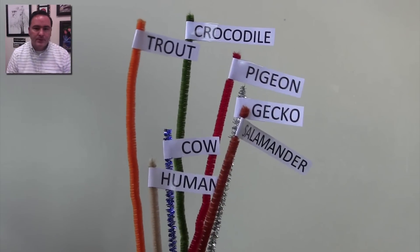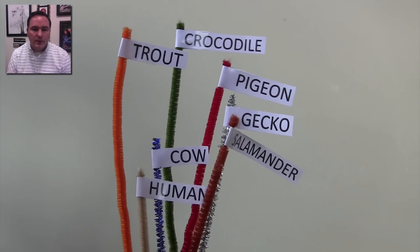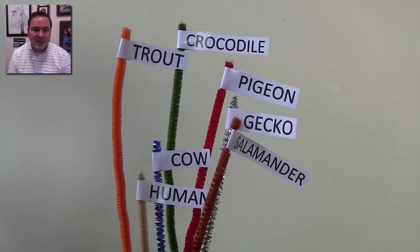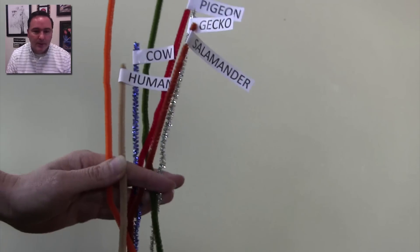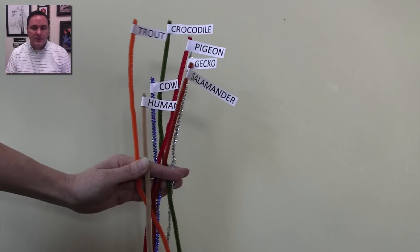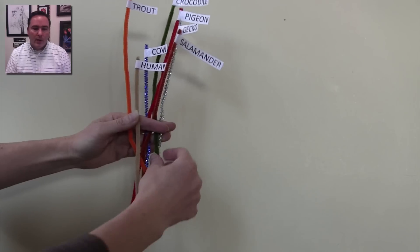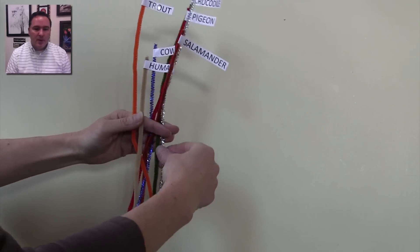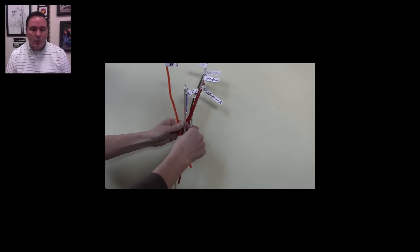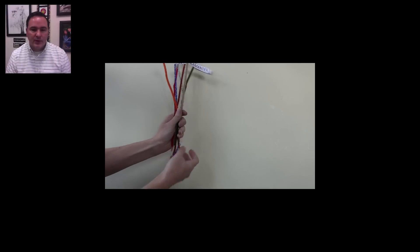Okay, so here we have the pipe cleaners with the different organisms that you worked with: trout, crocodile, pigeon, gecko, salamander, cow, and human, and they're all connected to a pipe cleaner. What we're going to do is first start by twisting all of the pipe cleaners together at the bottom at the root of the phylogenetic tree.